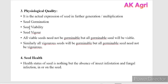Seed viability is the state of aliveness — it shows whether a seed is dead or alive. Seed vigor is the degree of aliveness, indicating the strength, stamina, or energy of the seed to produce a vigorous seedling.